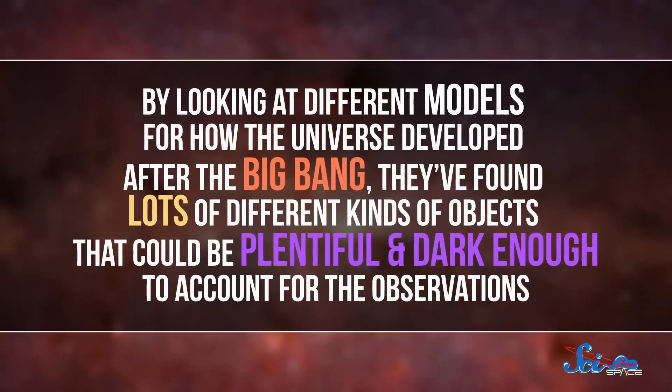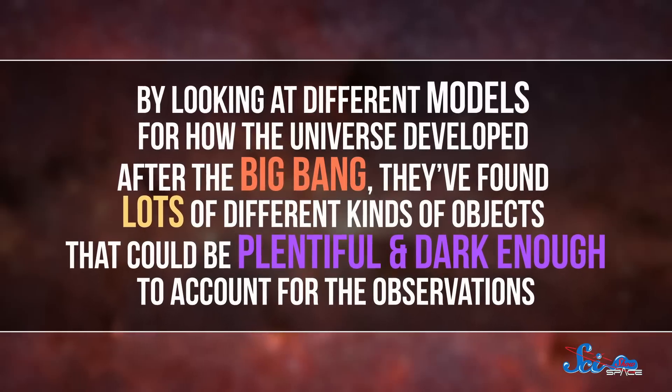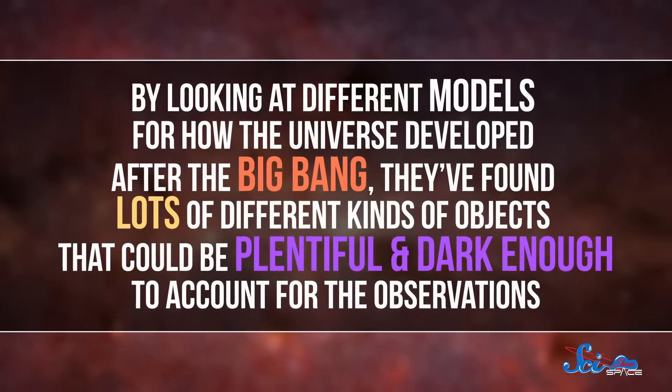Most cosmologists accept that dark matter is out there, and they want to figure out what it is. By looking at different models for how the universe developed after the Big Bang, they found lots of different kinds of objects that could be plentiful and dark enough to account for the observations. There are two main lines of thought on this, which we'll just call old physics and new physics.